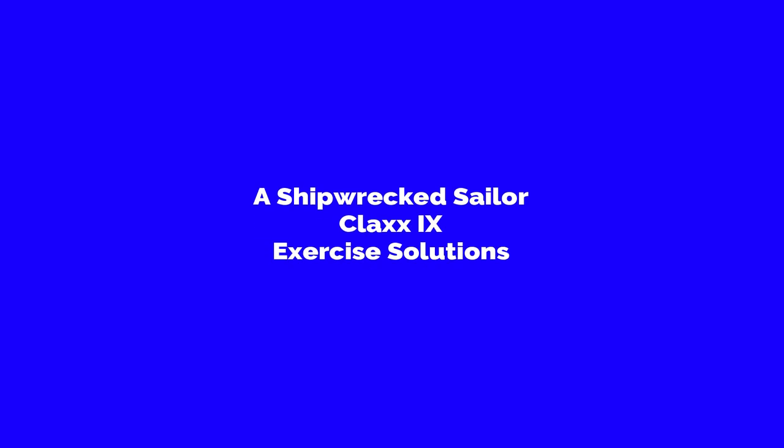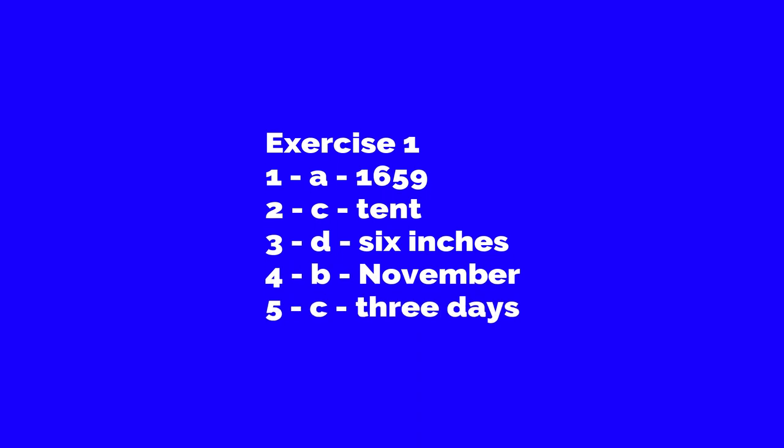Hello guys, today in class nine the 'A Shipwrecked Sailor' activity solutions we will do. Let's get started. In exercise one, take the correct answer from the given alternatives. One: Robinson Crusoe was shipwrecked in — options: a) 1659, b) 1559, c) 1359, d) 1959. Answer is a) 1659.